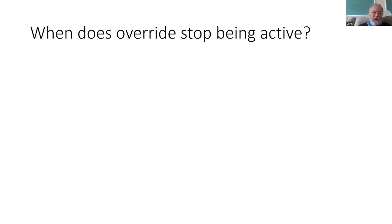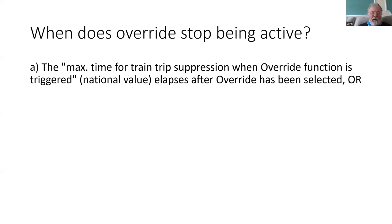How long is the override active for? We look in Chapter 5 of Subset 26, and it gives us a whole list of conditions. The first one is if the override has been active for more time than is allowed, set in a national value — anything from a few seconds up to a lot of seconds. If the override is operational for more than that time it will automatically turn off. This means you can't just select override and continue indefinitely, ignoring all of the Balise groups or anything else you might encounter.